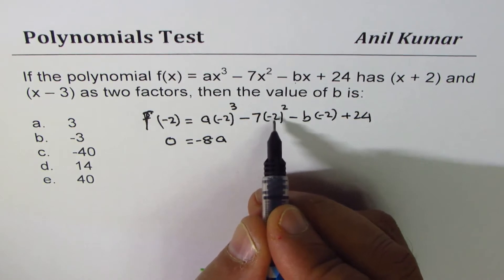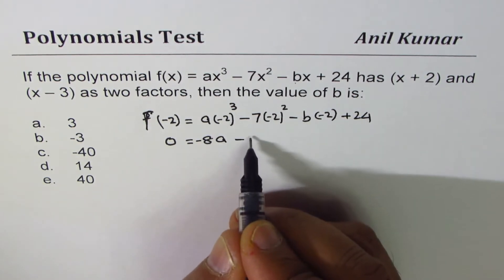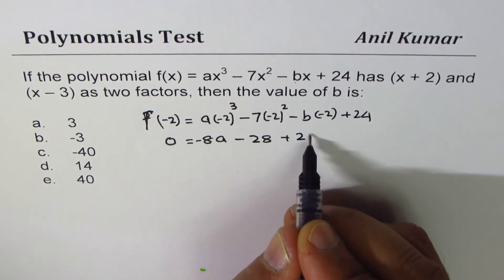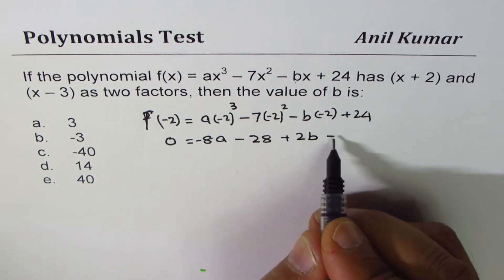-2³ is -8a, that gives us plus, right? So, plus 4 times 7 gives us 28, minus, minus, minus becomes plus,